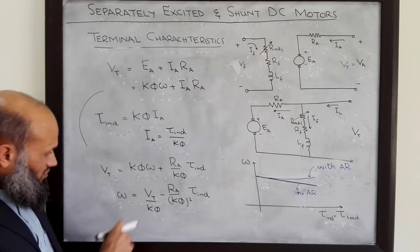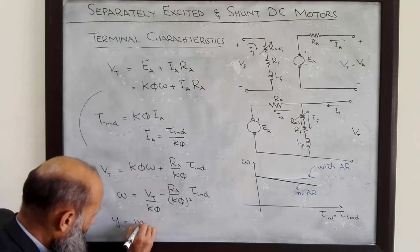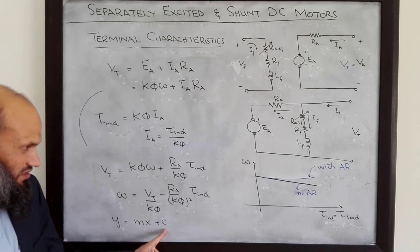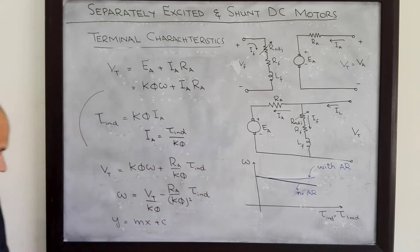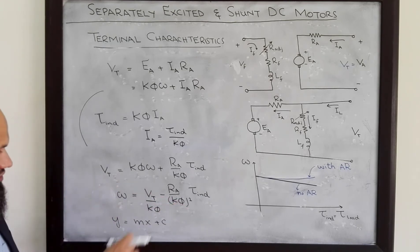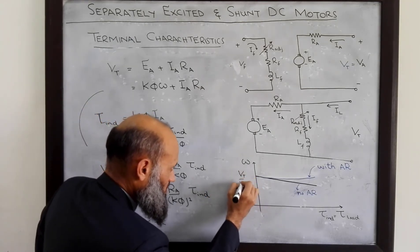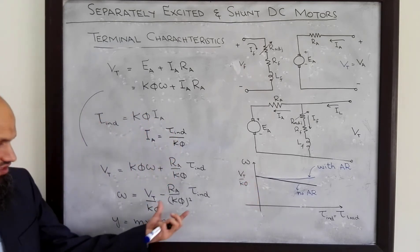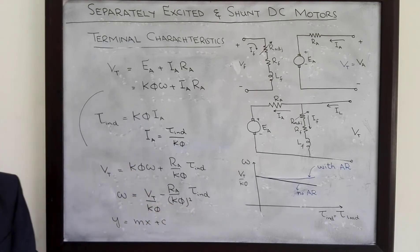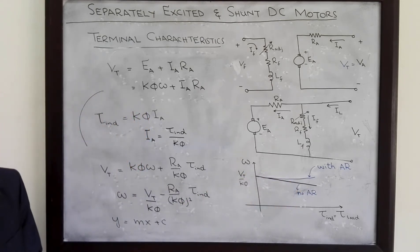This equation is quite similar to the equation of a straight line, y = mx + c, where m is the slope and c is the vertical intercept. Comparing, the vertical intercept is Vt/(Kφ) and the slope is negative — Ra/(Kφ)². Therefore, the torque-speed characteristics are described by a straight line with a negative slope.